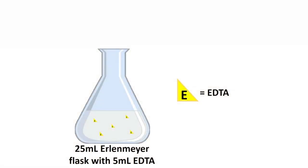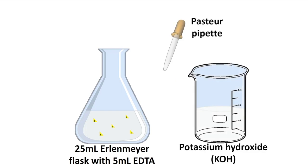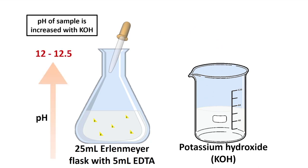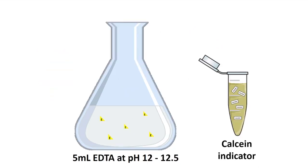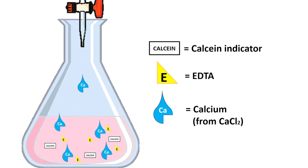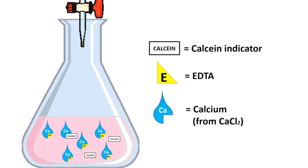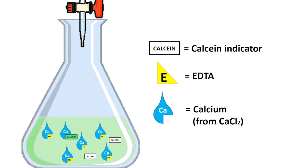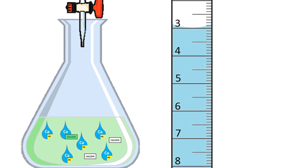To 5 milliliters of EDTA solution, add appropriate amounts of potassium hydroxide to increase the pH to the range of 12 to 12.5. Then add a small amount of calcium indicator. The color of the solution should turn pink at this point. To the pink solution, add the calcium chloride solution. In this process, additional calcium ions bind to EDTA until all of them are bound. Keep adding the calcium chloride solution slowly, and a small amount of excess calcium ions will bind to the calcium indicator, which causes the color to turn into a permanent green. Stop here and record the volume of calcium chloride used.